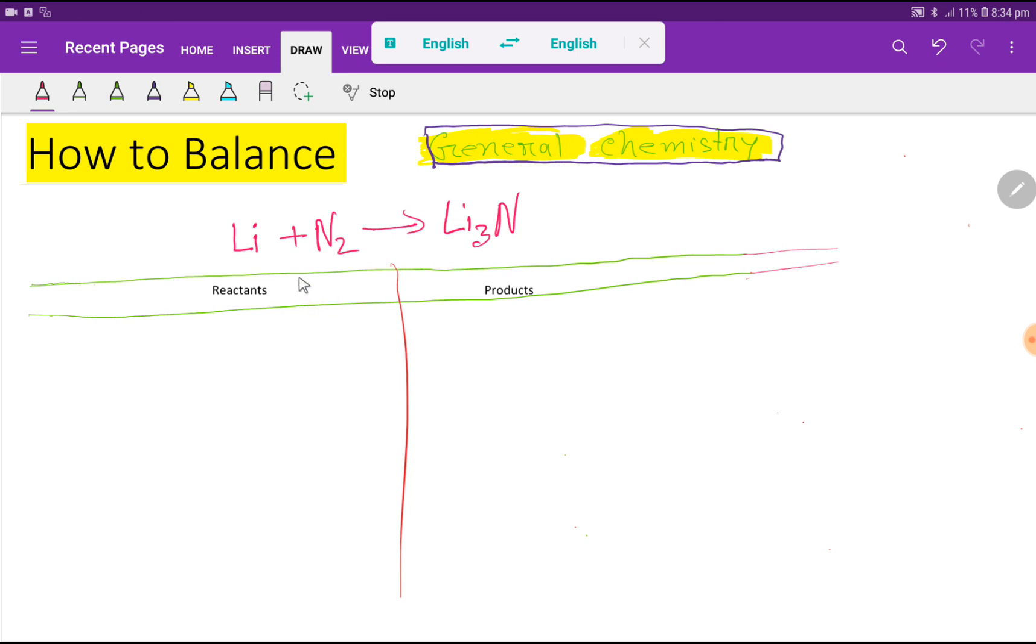This is reactant side and this is product side. In the reactant side we have lithium that is one, then we have nitrogen that is two. In the right hand side we have lithium that is three and nitrogen we have one. So to balance this reaction means we have to balance the number of lithium and nitrogen from both sides.